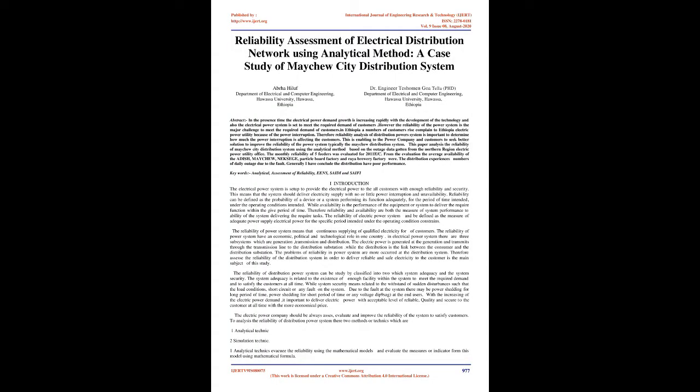Reliability Assessment of Electrical Distribution Network Using Analytical Method: A case study of Macha City Distribution System. In the present time, electrical power demand growth is increasing rapidly with the development of technology, and the electrical power system is set to meet the required demand of customers. However, the reliability of the power system is the major challenge to meeting customer demand. In Ethiopia, a number of customers raise complaints to Ethiopia Electric Power Utility because of power interruptions. Therefore, reliability analysis of the distribution power system is important to determine how much power interruption is affecting customers, enabling the power company and customers to seek better solutions to improve the reliability of the power system, typically the Macha Distribution System.